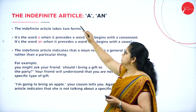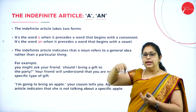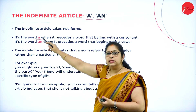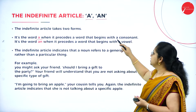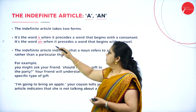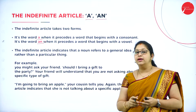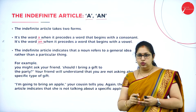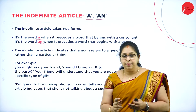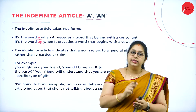The indefinite articles in English are 'a' and 'an.' The indefinite article takes two forms: 'a' is used when it precedes a word that begins with a consonant sound, and 'an' is used when it precedes a word that begins with a vowel sound. So: 'a' is for consonant sound, 'an' is for vowel sound.